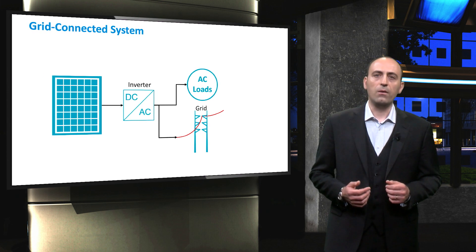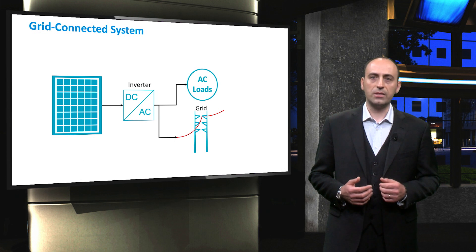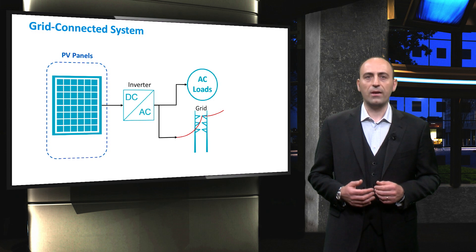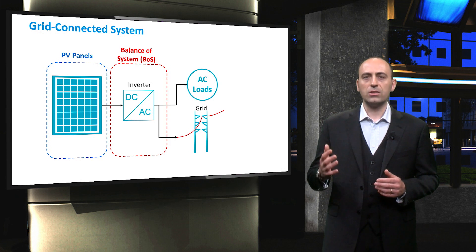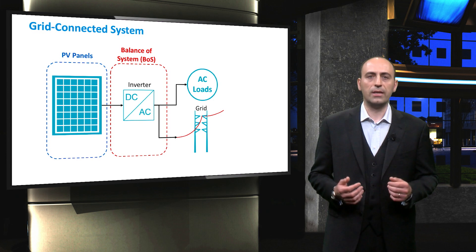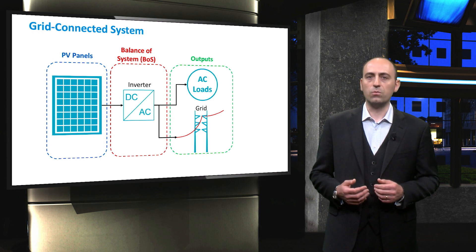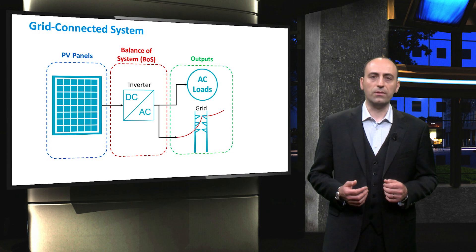In the same way, we can divide the components of a grid-connected PV system into several groups. Again, we have PV panels at the generation side, then the balance of system, which is much simpler than in the previous case, and finally the outputs, which are the AC load and the grid.